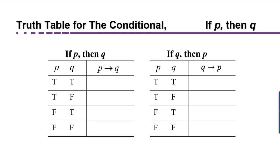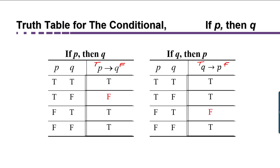In the previous video, we saw the truth table for the conditional P implies Q. Looking at the truth table on the left, look for the row where P is true but Q is false — that will be the only time that the statement is false and all the rest will be true. Similarly, if we turn around the conditional and say Q implies P, we're looking for anywhere that Q is true but P is false, which actually happens in the third row, and all the other scenarios are true.